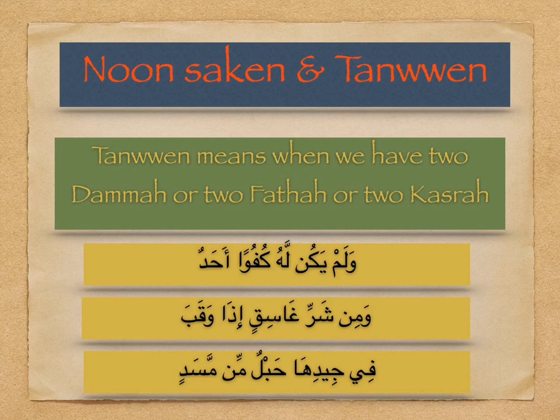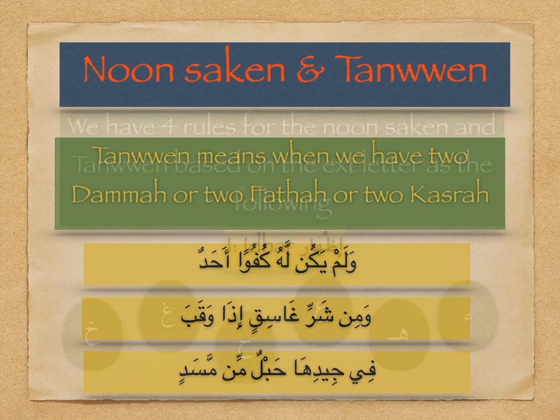Tanween, also, is the same as Noon Sakin — when we have two Dhamma, or two Fathah, or two Kesra over or under any letter in a sentence. For example, in the word 'Kufuwan' we have two Fathah over the Alif, two Kesra under the Qaf, and two Dhamma over the Lam. This is an example of Tanween.